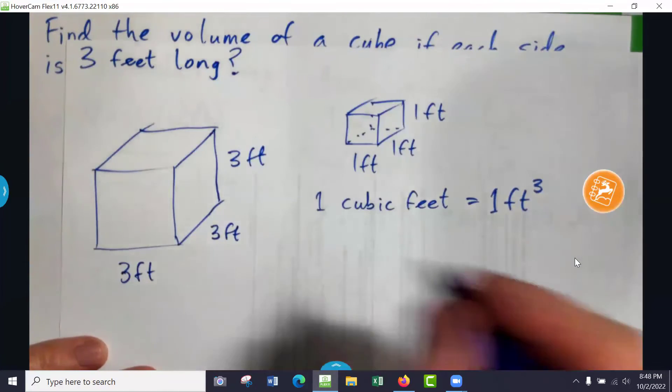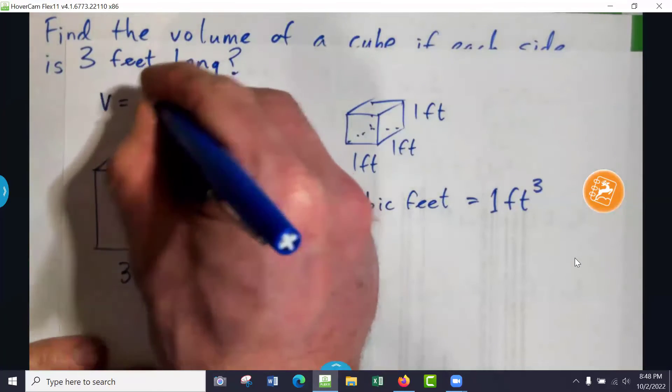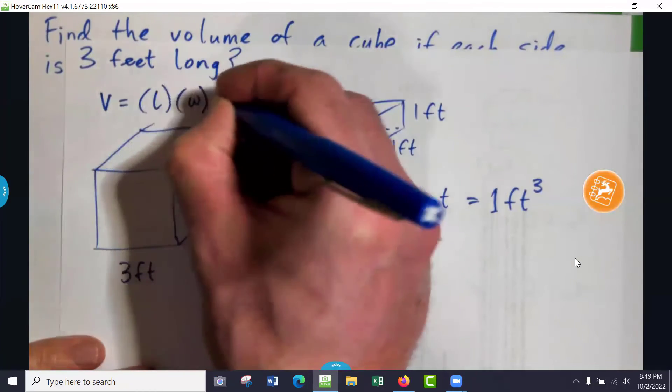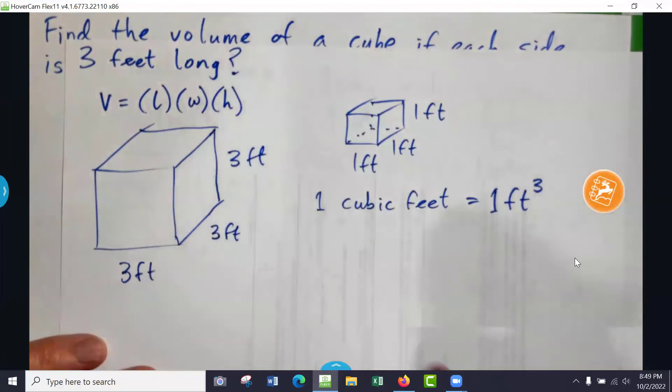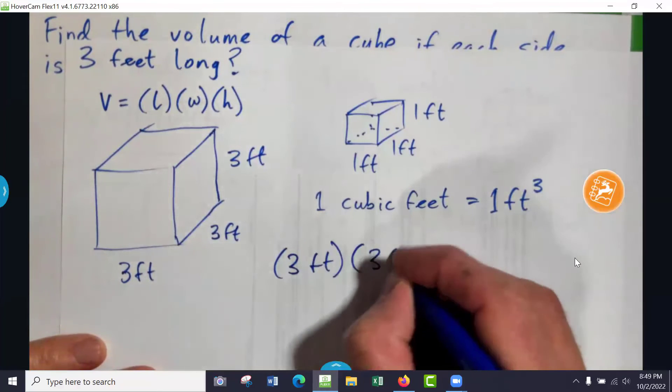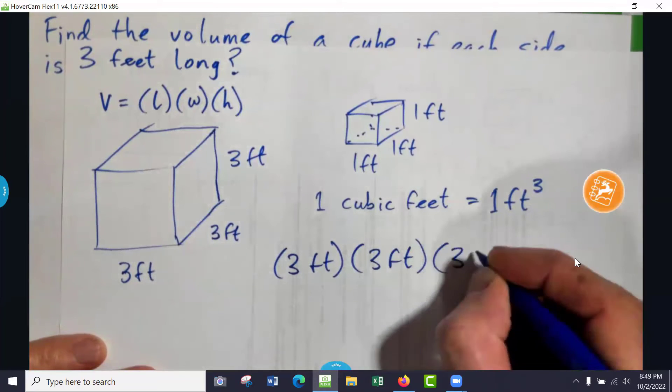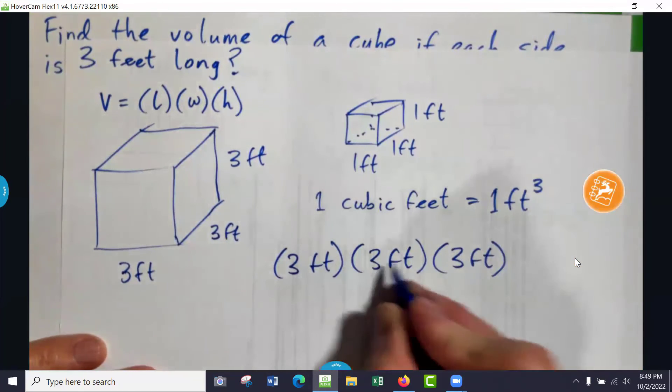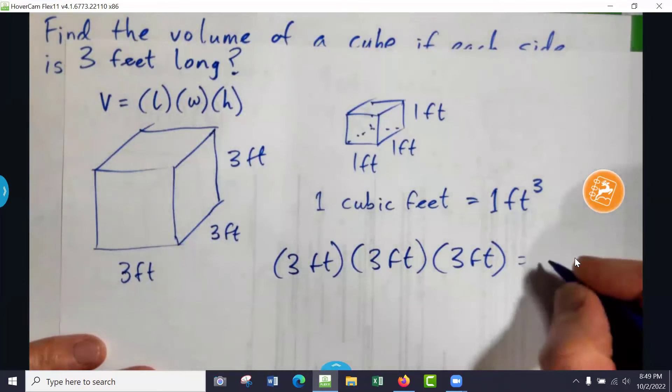And the volume of a cube is length times width times height, or the volume of any rectangular prism, in fact. And so, that's just 3 feet times 3 feet times 3 feet, and 3 times 3 times 3 is 27.